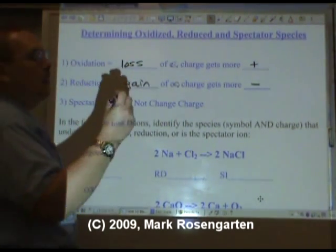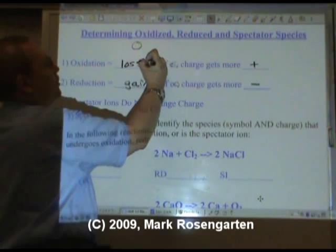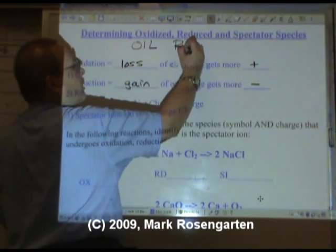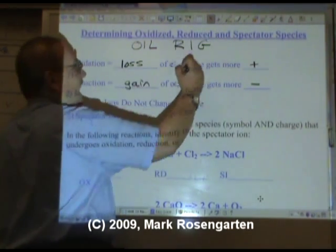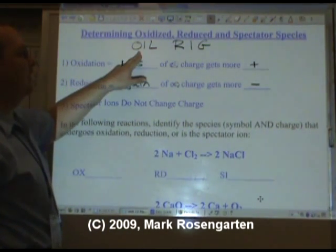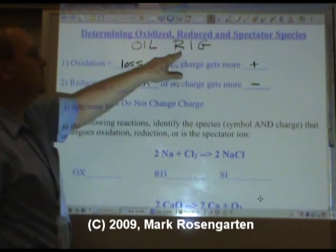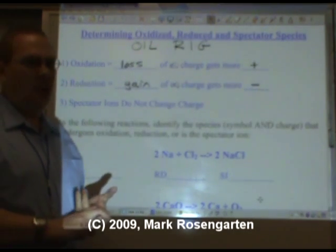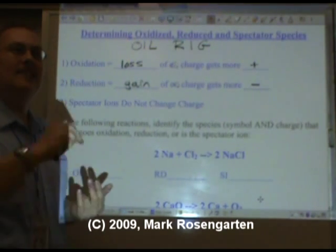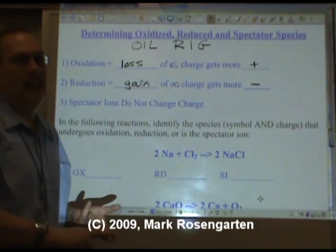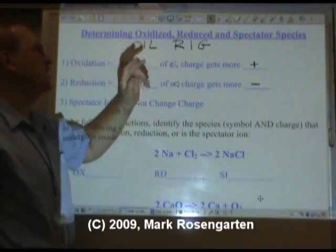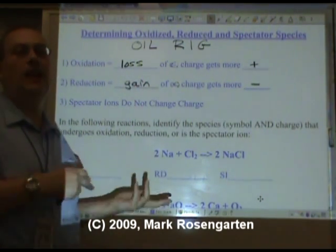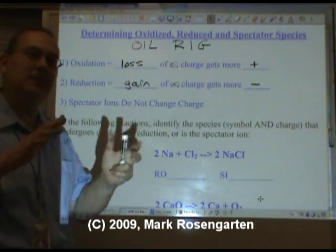The second way you can remember this is oxidation is loss, reduction is gain. The reason I like Leo the lion goes grrr better is because it says loss of electrons is oxidation. This isn't as specific. This says oxidation is loss, but it doesn't say loss of what. So Leo the lion goes grrr is actually better because it's more specific.